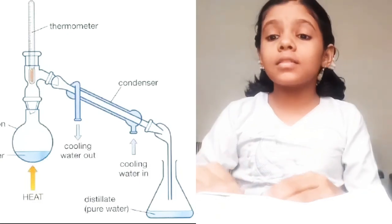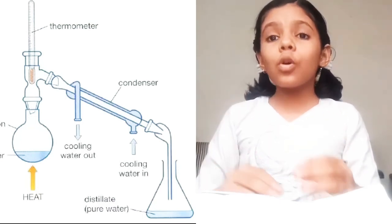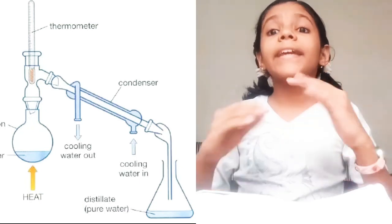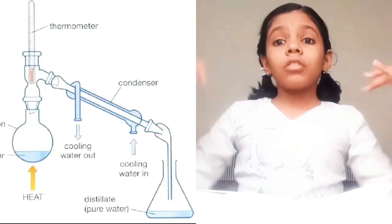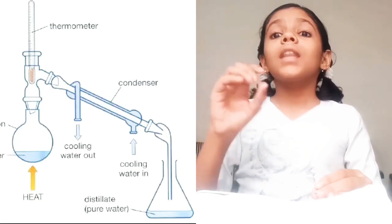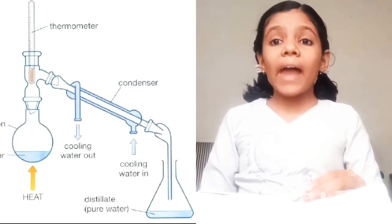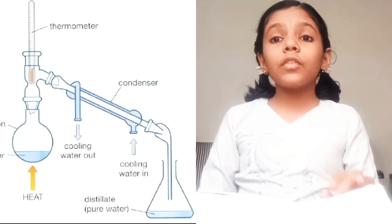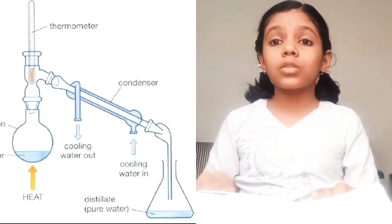Now let's talk about the third method, which is called distillation. Take some water in a glass jar and dissolve some salt in it. Put that water into the retort and heat the retort, placing cold water upon it. The water will get evaporated and condensed in the retort tube. The clean, purest form of water will collect in the other glass and the salt is left behind. Distilled water is used in medicines.